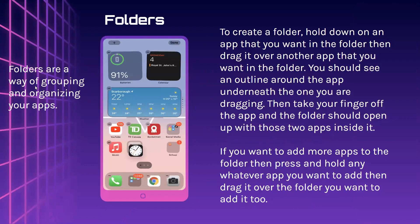Folders are a way of grouping and organizing your apps. To create a folder, hold down on the app you want in the folder, then drag it over to another app you want in the folder. You should see an outline around the app underneath the one you're dragging. Then take your finger off the app and the folder should open up with those two apps inside it. If you want to add more apps to the folder, press and hold the app you want to add, then drag it over to the folder.